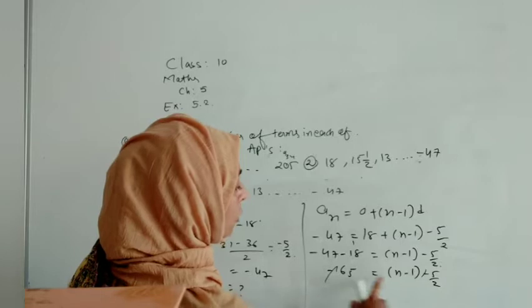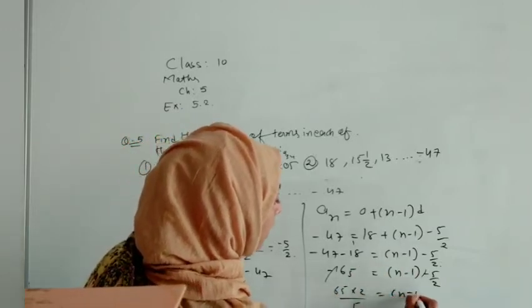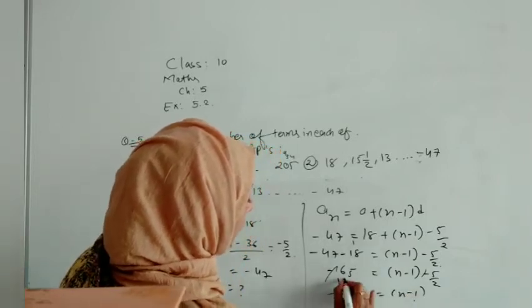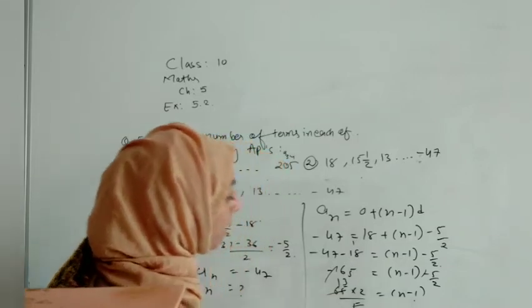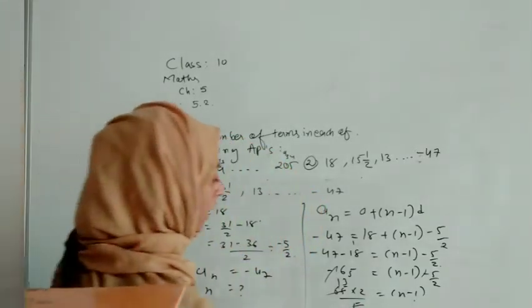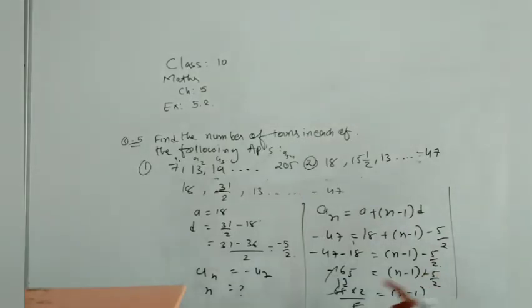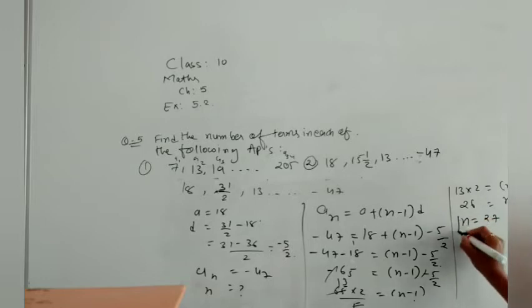Further on we will do it more. So here minus 65 we got, and that is equal to (n minus 1) times minus 5 by 2. Minus minus will cancel out. This 2 will go in multiply and this 5 comes down and it will be in divide. Let us solve it. In the table of 5, 5 thirteens are 65. 13 into 2 is 26. 26 is equal to n minus 1. Let us shift that 1. 1 will come here and it will become plus. So n we are getting in the form of 27.